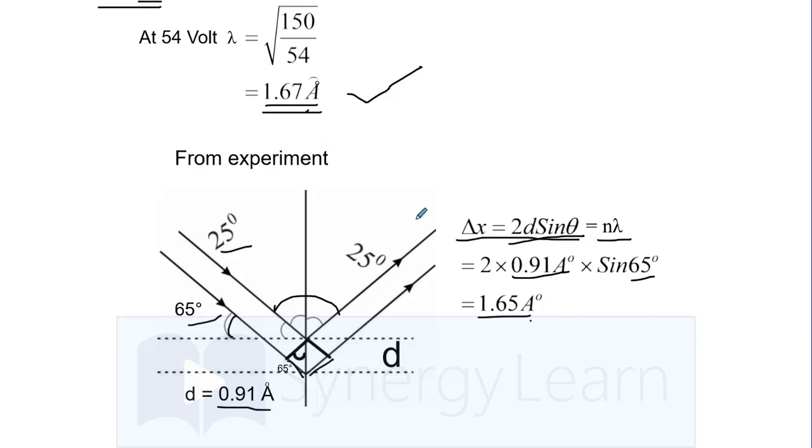This value is closer to 1.67, which shows that value of n will be 1 here, and the slight difference between 1.65 and 1.67 is well within experimental error. From experiment we obtain wavelength of 1.65 angstrom, and from theory we obtain 1.67 angstrom. That means the theoretical value is confirmed from the experiment also.